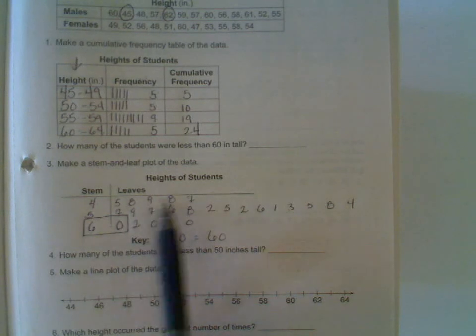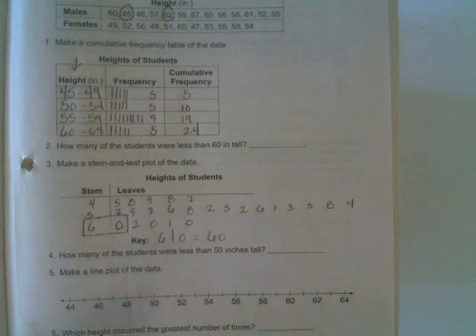So instead of 5, 8, 9, 8, 7, for instance, next to 4, we would write 5, 7, 8, 8, 9, and that would be an ordered stem-and-leaf plot.